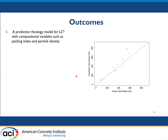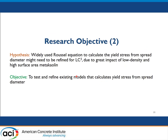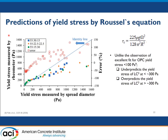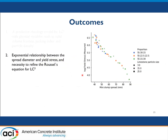The first outcome is that a predictive rheology model for LC3 can be built using compositional variables such as packing index and particle density. The second research objective was to test and refine existing models from the mini-slump test. A plot of the natural log of yield stress versus mini-slump spread shows data points falling on a single line, suggesting an exponential relationship between these two parameters, but it diverges for low-spread samples. The Roussel equation gives high errors, especially for yield stress higher than 300 Pascal, and underpredicts yield stress for samples below 300 Pascal — so it needs refinement.